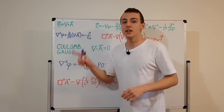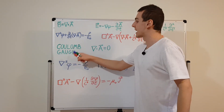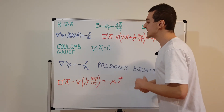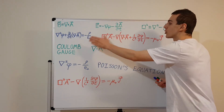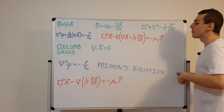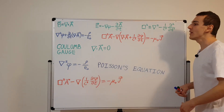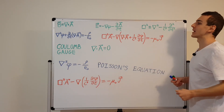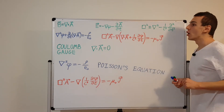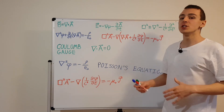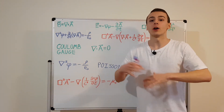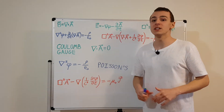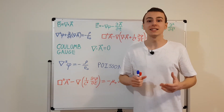So this was a video on the Coulomb gauge. Hopefully you now understand what the Coulomb gauge can do for us: how it simplifies the two second-order partial differential equations, how it helps us find phi and A, and in turn E and B — which is the goal of classical electromagnetism. Once we know E and B, we know how charges and currents will move and behave as a function of time. Make sure you check out the other videos in the electromagnetism playlist.